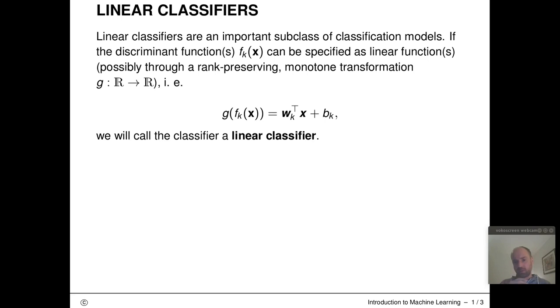If you remember the definition of the decision boundary and decision region, these things don't change. They are completely the same before or after such a monotone transformation. This is the reason why we allow this in the definition.